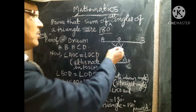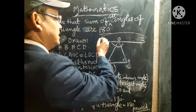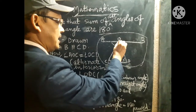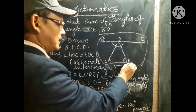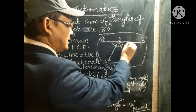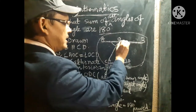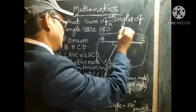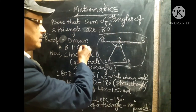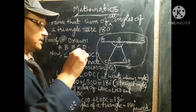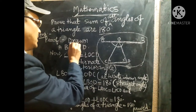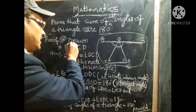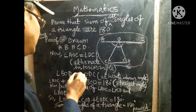I have drawn this figure. Here you are seeing angle O, angle C, angle D, and this is a line segment AOB. One important thing: AB is drawn parallel to CD.